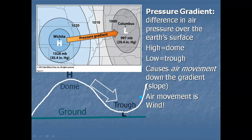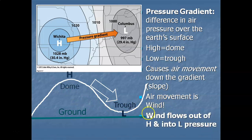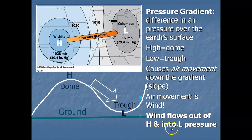We get air movement downslope. Wind speeds are proportional to the difference in air pressure. A really intense low, like a hurricane, creates a huge difference in air pressure versus the surrounding environment, giving proportionally strong winds. If the high and low are not very intense, the difference in air pressure is small, and you won't have much wind. Wind always blows out of high pressure and into low pressure.